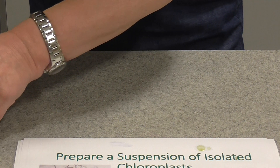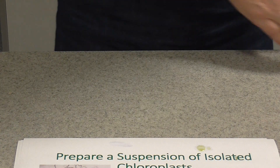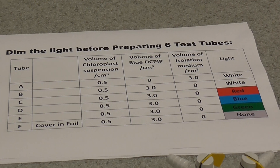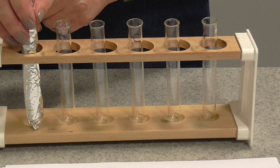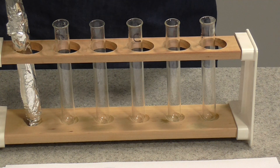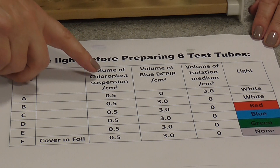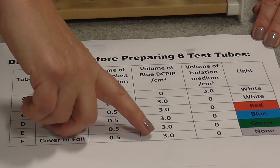While you were waiting for the leaf extract to spin in the centrifuge, you could have been preparing your experimental tubes. You need six test tubes labelled A to F. Tube F needs to be covered in foil because it is our control — it's going to be kept in the dark. Now, once you've made your chloroplast suspension, turn down the lights, because as soon as you start exposing these chloroplasts to light, the light-dependent reaction will start taking place. Use different sized syringes to add different volumes of chloroplast suspension, DCPIP, and isolation medium to the different tubes.